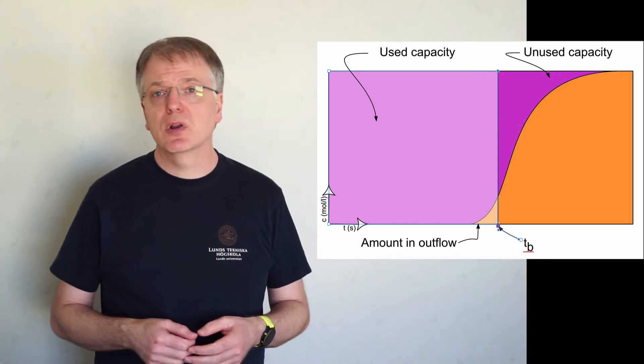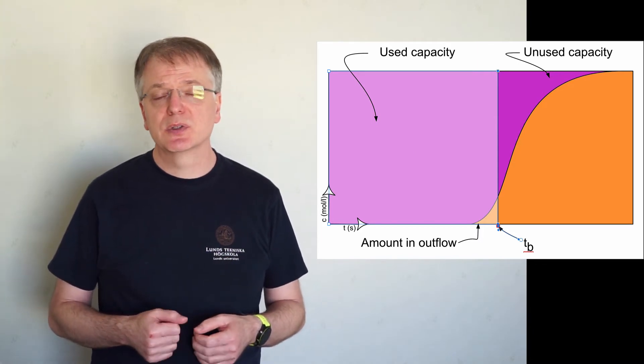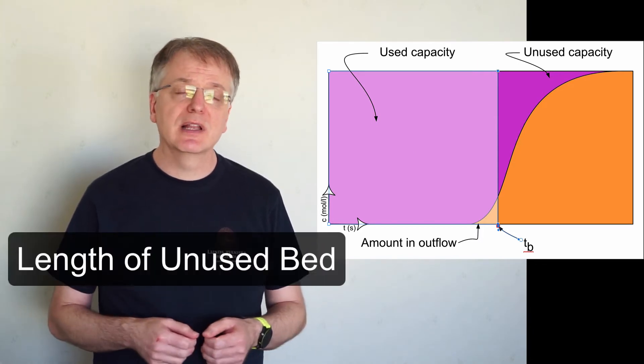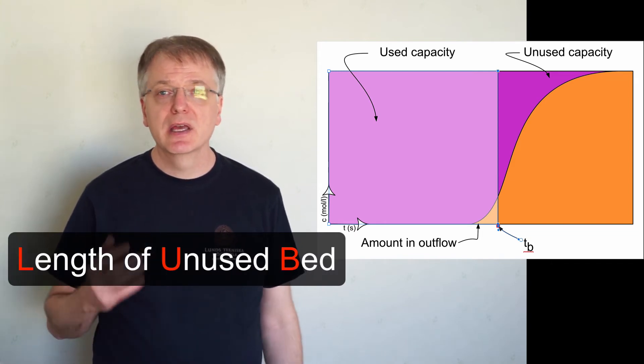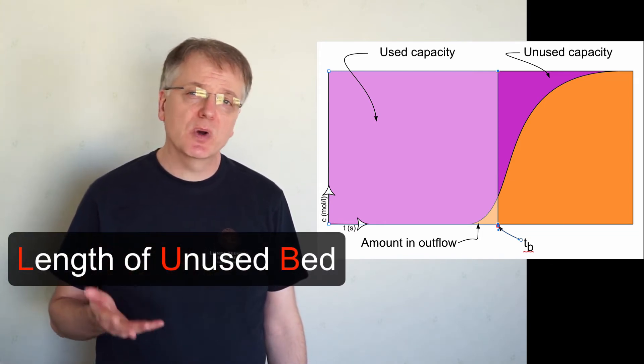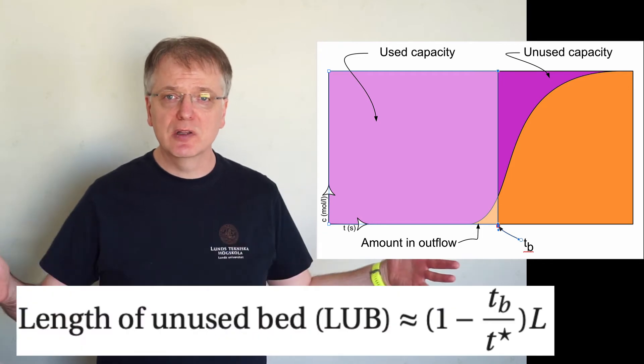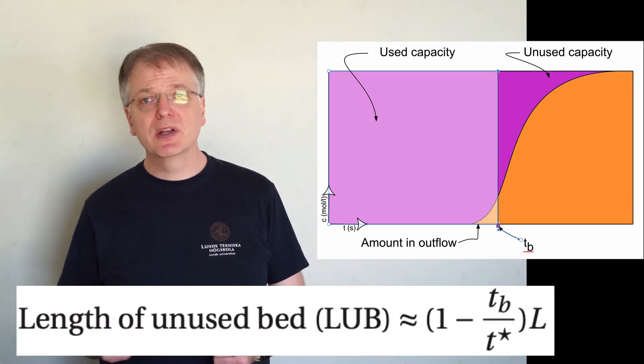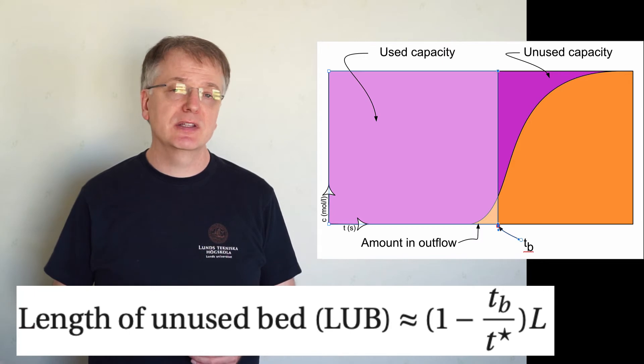The part of the column capacity that we do not utilize is often referred to as the length of unused bed, LUB. LUB approximately equals the length of the column multiplied with 1 minus TB divided by T star.